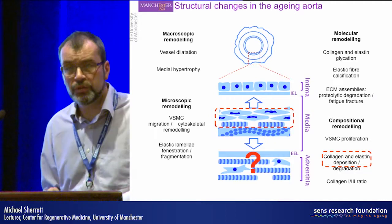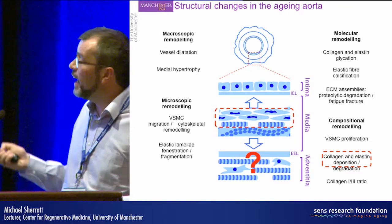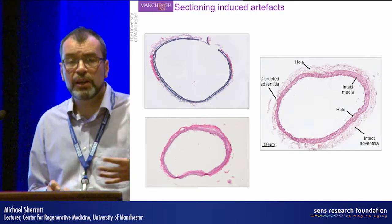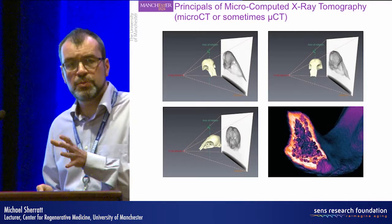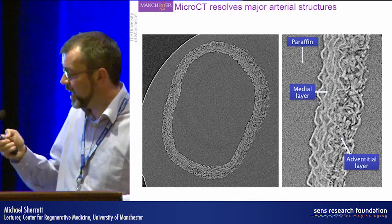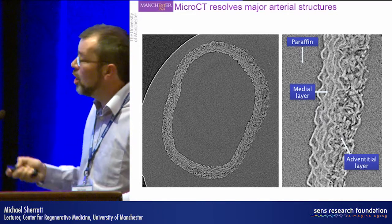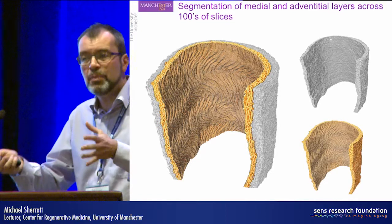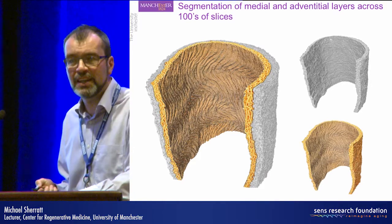What's missing is the adventitia, partly due to difficulties of sectioning — whether cryosection or paraffin section, the aorta often becomes disrupted and torn away from the media layer. One approach is to use micro-CT imaging, commonly used for calcified tissues. We've succeeded in demonstrating that micro-CT imaging of an intact vessel is feasible — here, a rat common carotid — where we can see the elastic lamellae in the media and the adventitial layer. We've developed new image analysis approaches to segment out the contributions of the media and adventitial layers separately.